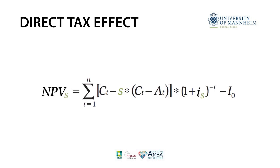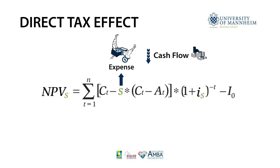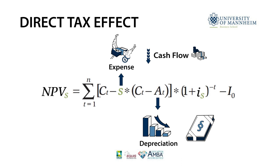Let's first look at the effect on the cash flow C. Tax payments in connection with the investment are treated as expenses and thus reduce the cash flow. In addition, if an asset used over several periods was acquired for an initial cost I0, it must be capitalized and depreciated according to domestic tax accounting standards. This tax depreciation per period is denoted by A, whose diminishing effect on the cash flow depends on the tax rate S.